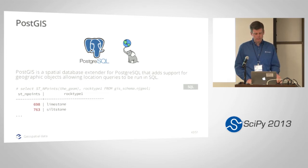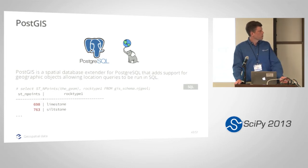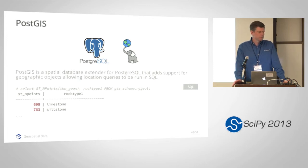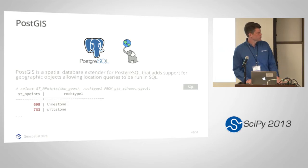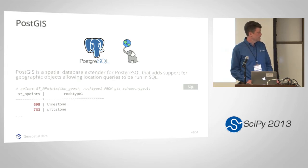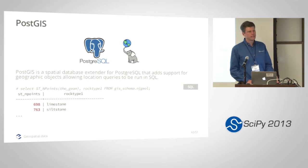The first one is PostGIS. This is a spatial extension to PostgreSQL, which is an open-source relational database. Oracle, Microsoft, and others have spatial capabilities, and some NoSQL databases do as well. But PostGIS is probably the biggest and best supported in the open-source world. It lets you store and query geometries, and it has a spatial index called an R-tree that does spatial queries really efficiently.